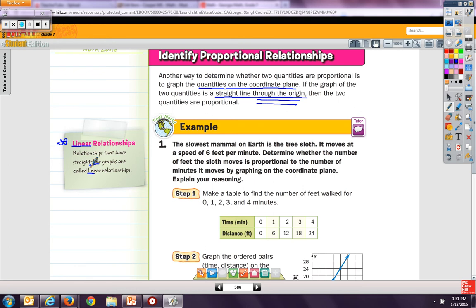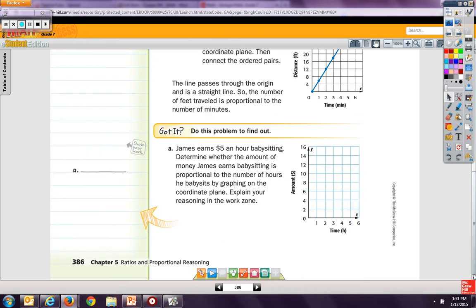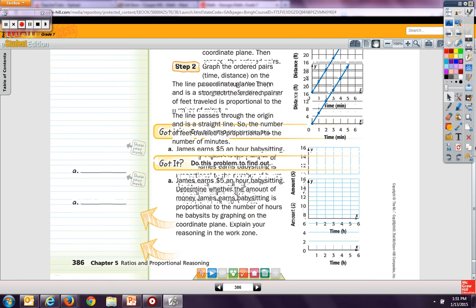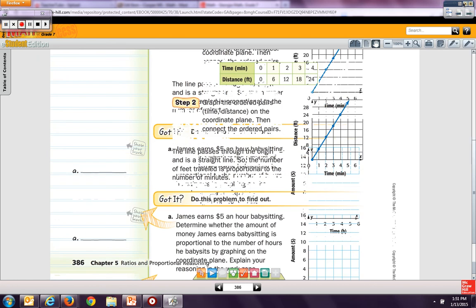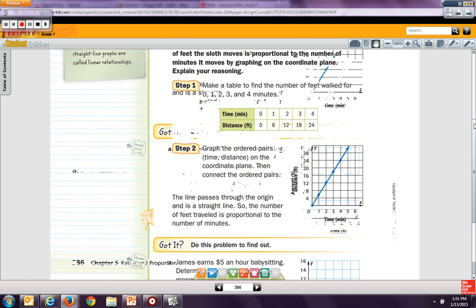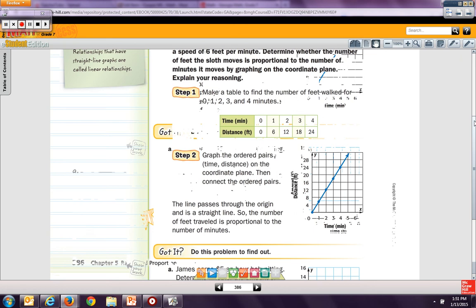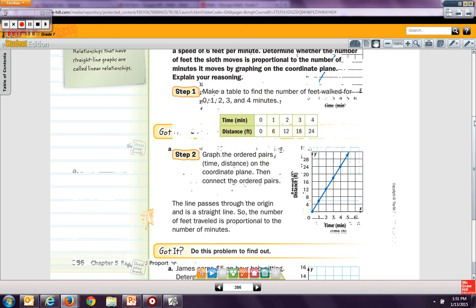So, here's an example. And it says, the slowest mammal on Earth is the tree sloth. It moves at a speed of 6 feet per minute. Determine whether the number of feet the sloth moves is proportional to the number of minutes it moves by graphing on the coordinate plane. Explain your reasoning. It says make a table to find the number of feet walked for 0, 1, 2, 3, and 4 minutes. So, here we're looking at a table once again.